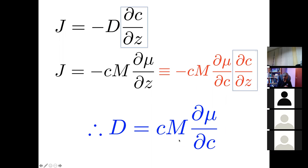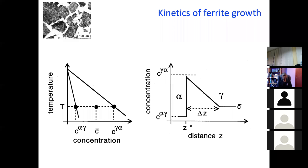With this basic introduction, I'm going to go into the growth kinetics of ferrite. You can assume that we are taking the diffusion coefficient as defined by this thermodynamic equation, not by Fick's law. By doing this, we can substitute D in the normal kinetic theory that has existed for a long time. We are looking at the thickening kinetics of ferrite in steel.